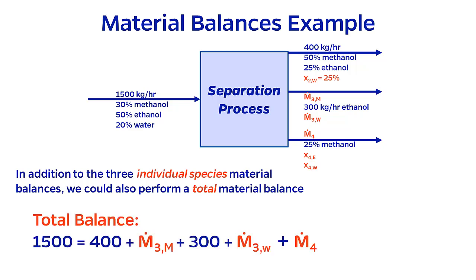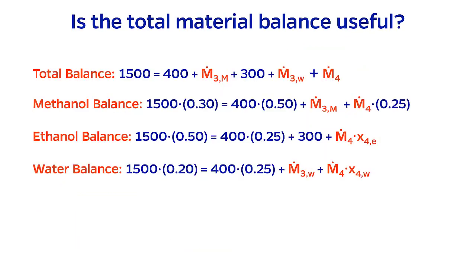The total balance says that 1,500 kg per hour from the input stream equals 400 kg per hour from the top stream, M3M plus 300, plus M3W kg per hour from the middle stream, plus M4 from the bottom stream. If we add this to our system of equations, it now looks like we've increased the number of equations from 3 to 4.